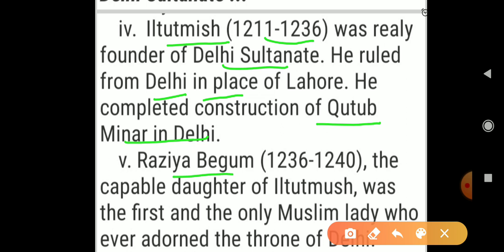Next is Razia Begum, the daughter of Ilthamish. After killing Aram Shah, Ilthamish had married his master's daughter — that is, Ilthamish, who was Aibak's slave, married the daughter of Qutbuddin Aibak. After Ilthamish's death, his daughter Razia Begum came to the throne. She was the first and only Muslim lady who ever adorned the throne of Delhi.